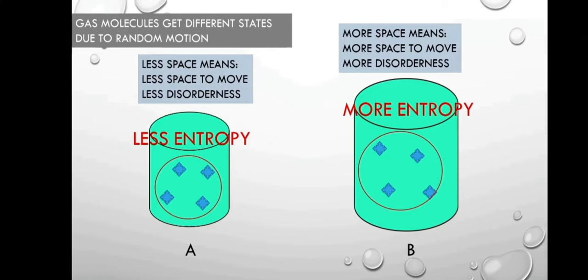Therefore, System A is less disordered — how can they be disordered when the space is small? While System B has so much room for the molecules to move freely, they become more disordered after some time. Because System A is less disordered, System A has less entropy. And because System B has more space and is more disordered, it has more entropy.